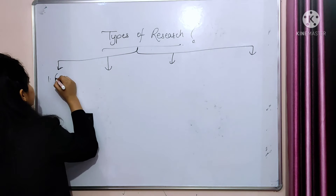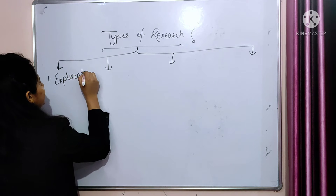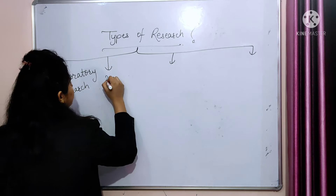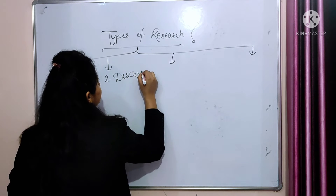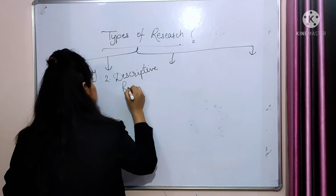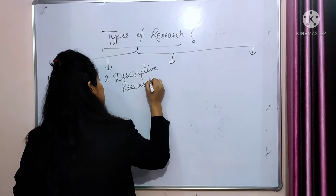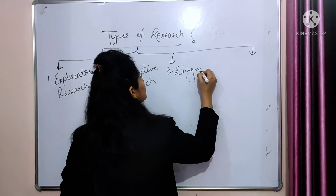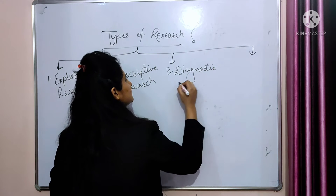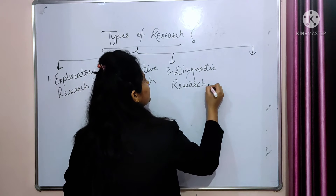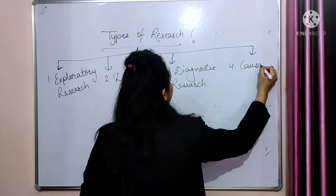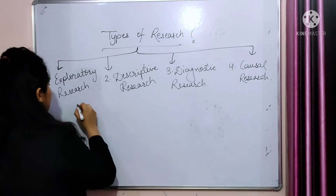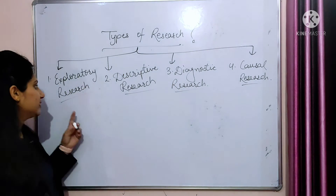Now coming to the next category of research types. The first is exploratory research. The second is descriptive research. The third is diagnostic research. And the fourth is causal research. Let's explain each one by one.